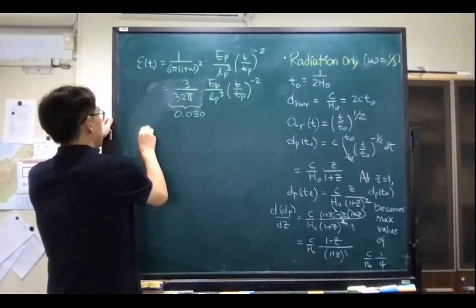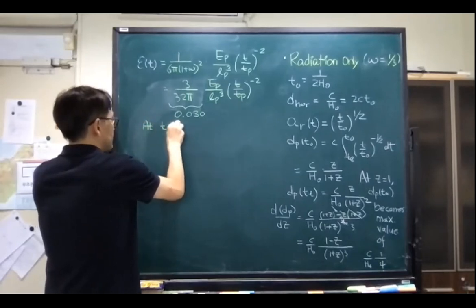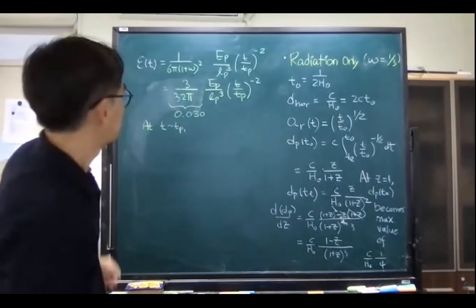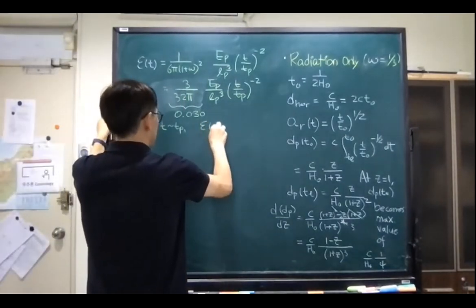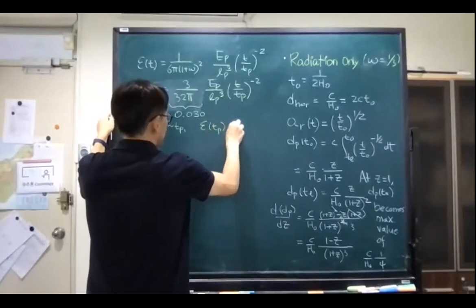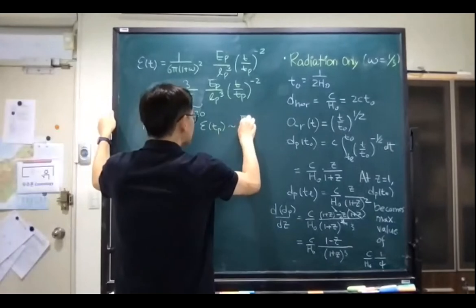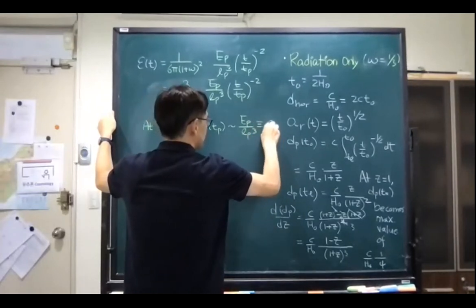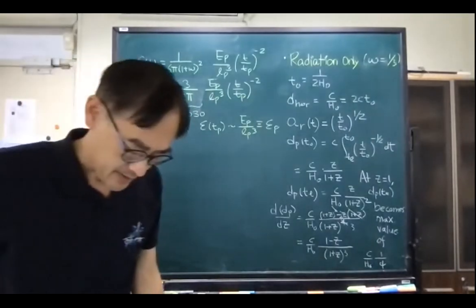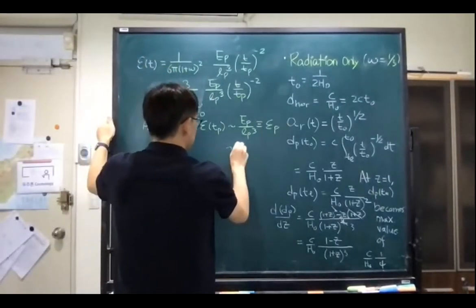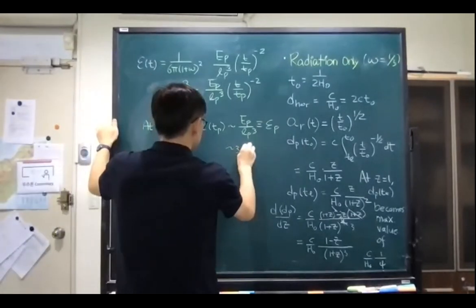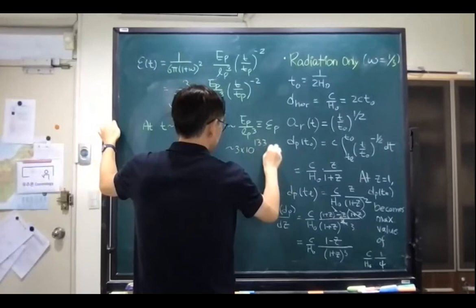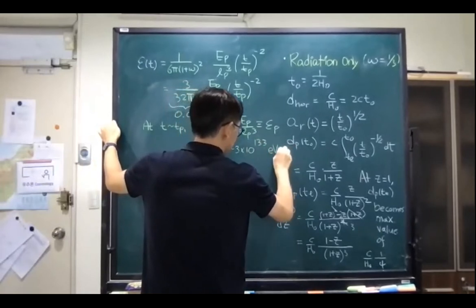What does it mean at t equal to t_p? This is fairly close to the Planck density. We can define this to be the Planck density, which turns out to be numerically about 3 × 10^113 electron volts per meter cubed — a huge number.